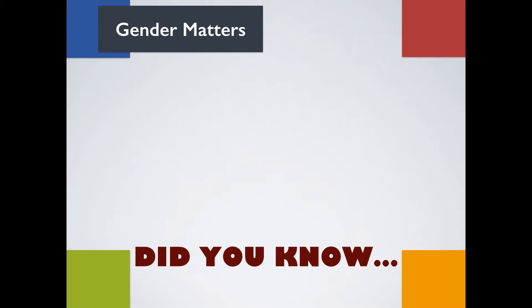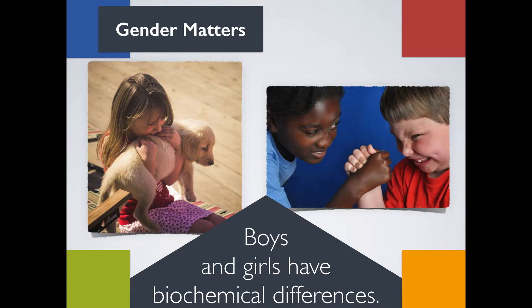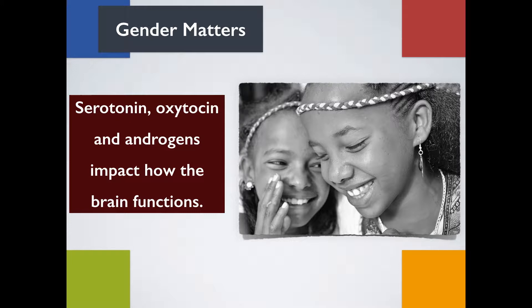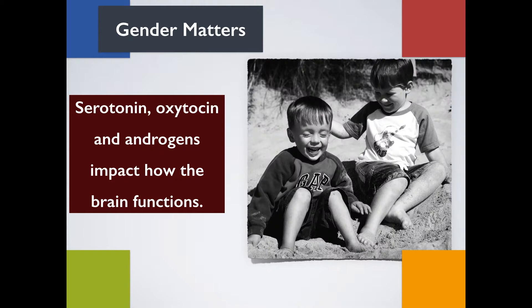Did you know that there are biochemical differences between boys and girls? Chemicals like serotonin, oxytocin, and androgens impact how the brain functions. Girls tend to have more serotonin and oxytocin, which drives their desire to bond, connect with others, communicate, observe, and practice intuitive skills. Boys have more androgens like testosterone, which impacts their competitive nature, self-assertiveness, and their desire to play, fight, and wrestle.